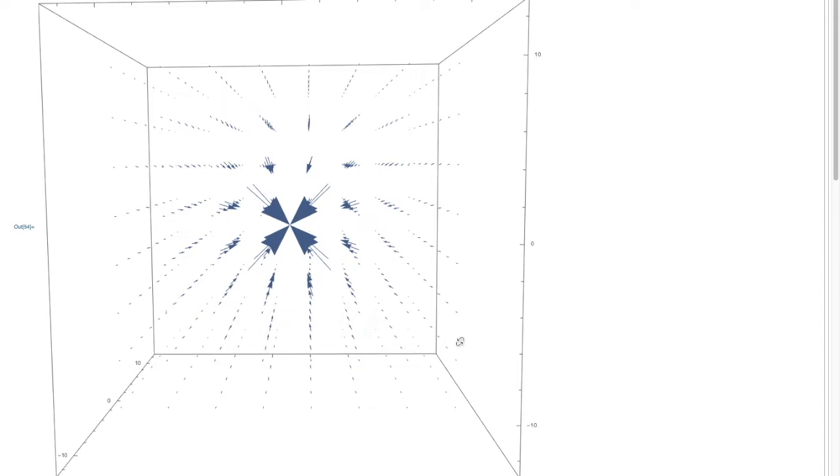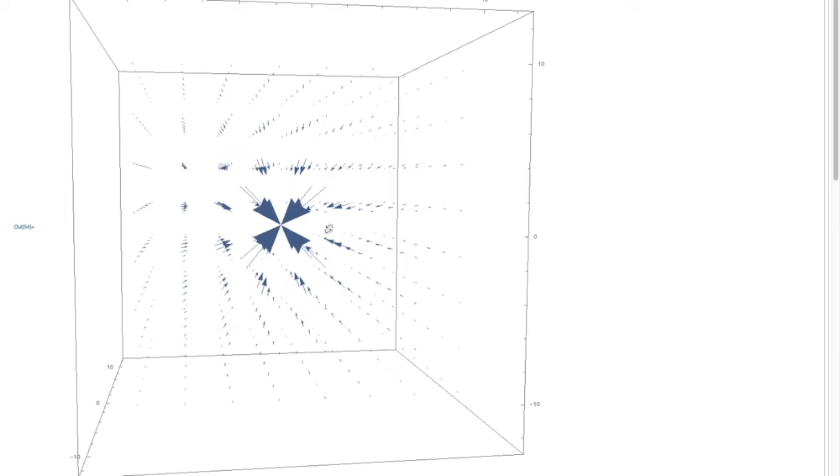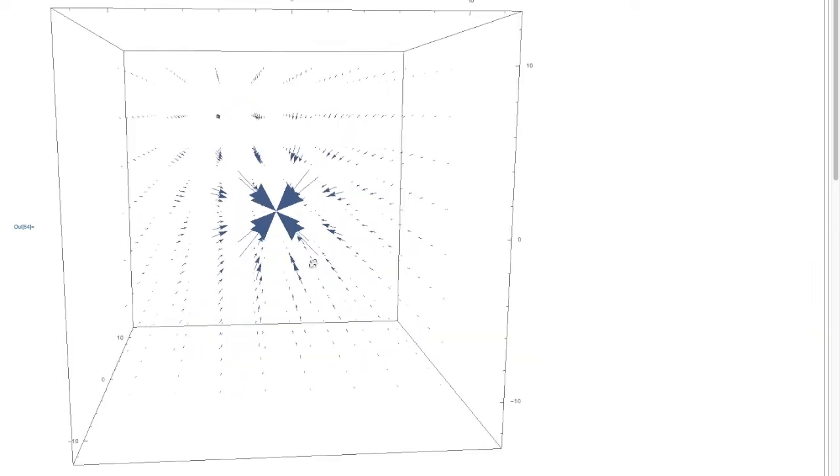Here is the plot of the gravitational vector field on an object at the origin. I graph this by using the vector plot 3D command in Mathematica. Notice how all the vectors are pointing to the origin, and the arrow sizes are decreasing as we move away from the origin. This is a characteristic of the gravitational vector field, which is also called an inverse square field.